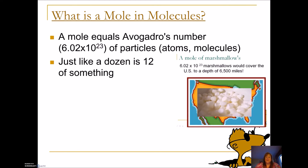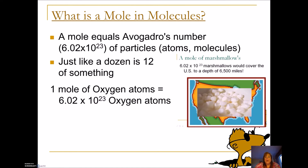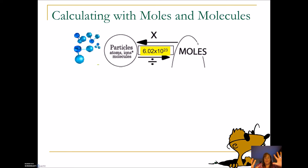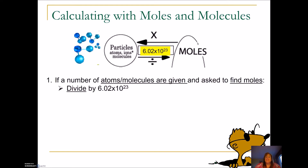So like 6.02 times 10 to the 23rd marshmallows, or more appropriately, one mole of oxygen atoms would be 6.02 times 10 to the 23rd oxygen atoms, or a mole of water molecules would be 6.02 times 10 to the 23rd water molecules. On the front of your packet, fill in that box: 6.02 times 10 to the 23rd. Anytime you are given some number of atoms or molecules and asked to calculate moles, you divide by 6.02 times 10 to the 23rd, because that's the number of molecules in a mole — so we need to cancel out molecules.